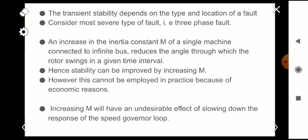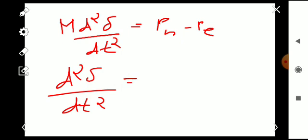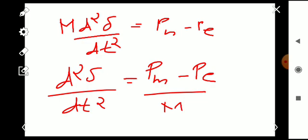That sentence is mainly depending upon the swing equation. Based on the swing equation, we know in terms of M we can write the swing equation as M times d²δ/dt² equals Pm minus Pe.